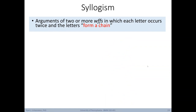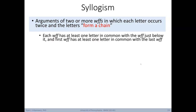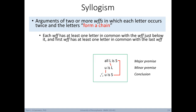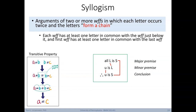A syllogism is an argument of two or more well-formed formulas in which each letter occurs twice and the letters form a chain. Each WFF has at least one letter in common with the WFF just below it, and the first WFF has at least one letter in common with the last. In our example, L connects across lines, U connects adjacently, and S connects the first and last — forming a chain. Syllogisms are structured as major premise, minor premise, and conclusion. This is conceptually similar to the transitive property in mathematics: if A equals B and B equals C, we can infer A equals C.